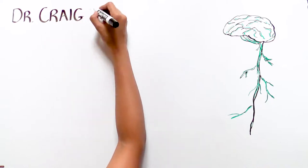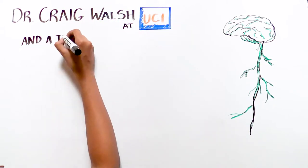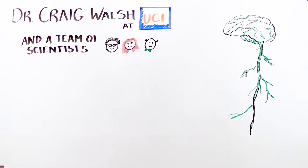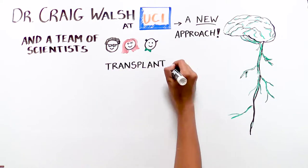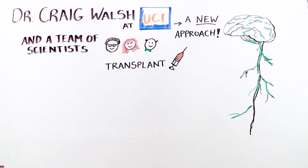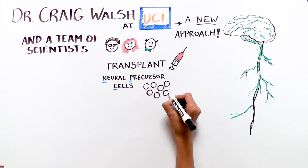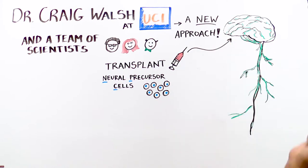A collaboration of scientists led by Dr. Craig Walsh from UC Irvine are taking a new approach to treating MS, a regenerative approach. Their strategy involves transplanting a type of cell called neural precursor cell, NPC, into the brain and spinal cord.